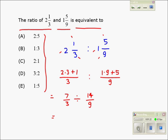Now we have converted the ratio as a division sign. In the next step, we are going to take the reciprocal and change the division sign into multiplication sign, so we take the reciprocal 9 over 14.